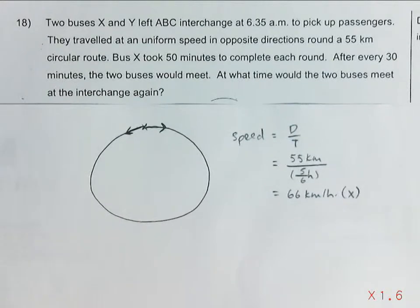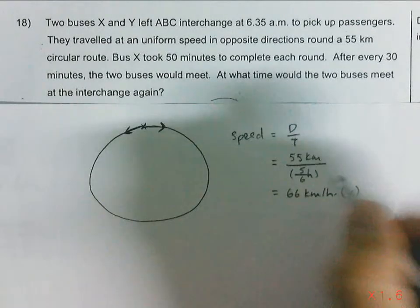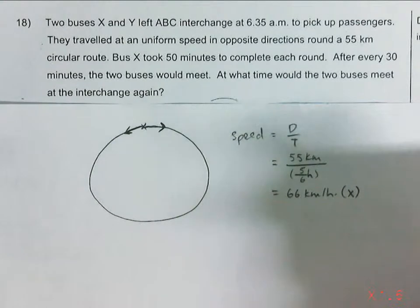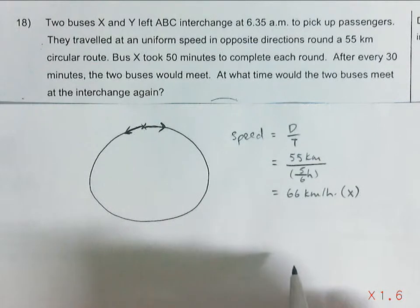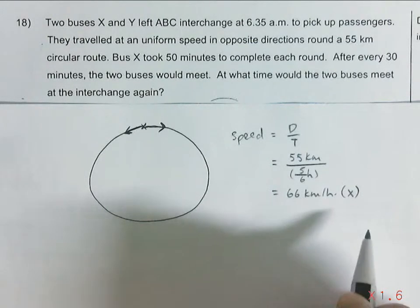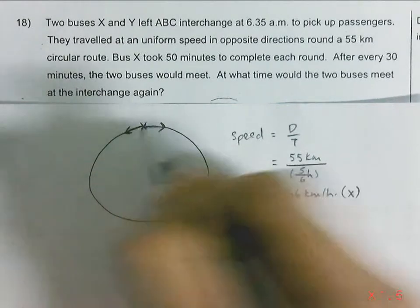Now it is given that every 30 minutes the two buses will meet. So after 30 minutes with the speed of X, we can find the distance traveled by Bus X from the starting point to the meeting point.